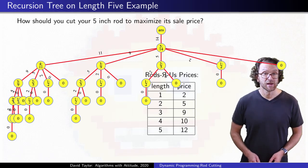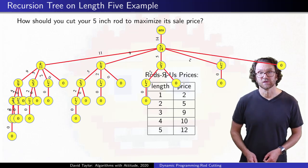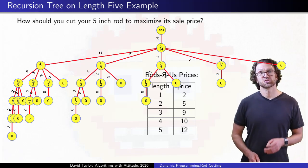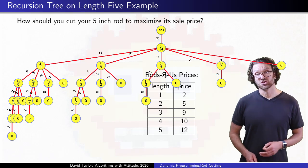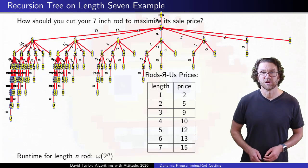At each of the 1 inch marks, we can make a cut or not. So for a length n rod, there are 2 to the n-1 possibilities. While the tree for a rod length 5 isn't too big, for length 7 it starts to look a bit crazy already.